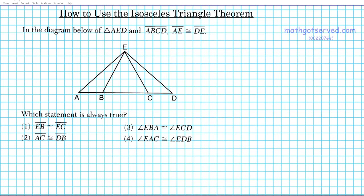We have four options here and we're going to take a look at all four. Let's mark them on the diagram and then figure out which one is correct. Option one says EB is congruent to EC, so let's mark that on the diagram: EB is congruent to EC.